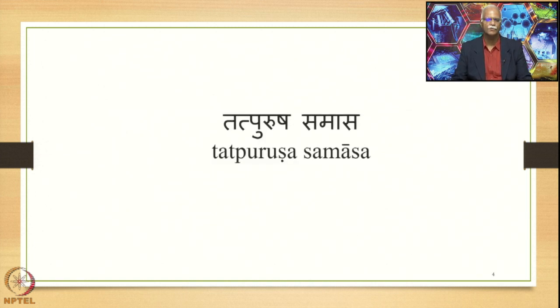We are dealing with the Tatpurusha Samasa. Tatpurusha Samasa is one of the major types of Samasas in Sanskrit. Avyaibhava, Tatpurusha, Bahuvrihi and Dvandva are the four major types. Tatpurusha Samasa occupies an important place amongst these four as it is one of the most productive Samasas, and it also has a number of sub-types which no other Samasa in Sanskrit has.